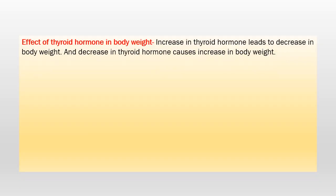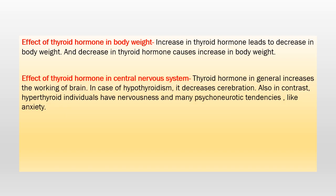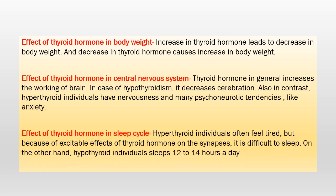Thyroid hormone also has a very important effect on body weight. An increase in thyroid hormone leads to a decrease in body weight, and a decrease in thyroid hormone causes an increase in body weight. Regarding the effect of thyroid hormone on the central nervous system, thyroid hormone in general increases the alertness of the brain. In hypothyroidism, it decreases cerebration. In contrast, hyperthyroid individuals have nervousness and many psychoneurotic tendencies like anxiety. In the sleep cycle, hyperthyroid individuals often feel tired, but because of the excitability effect of thyroid hormone on synapses, it is difficult to sleep. On the other hand, hypothyroid individuals sleep 12 to 14 hours a day.